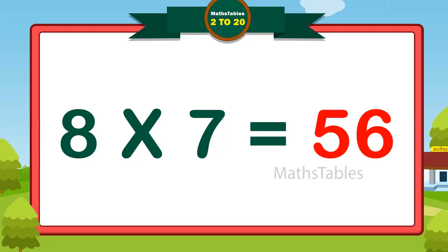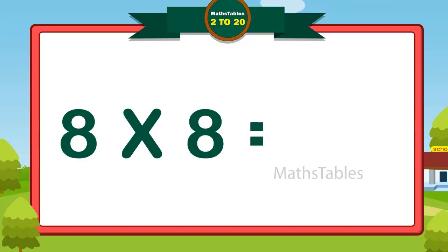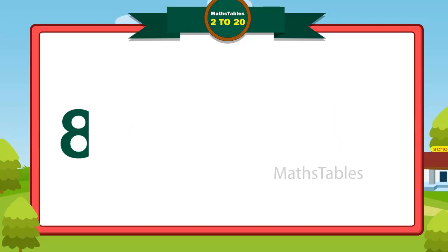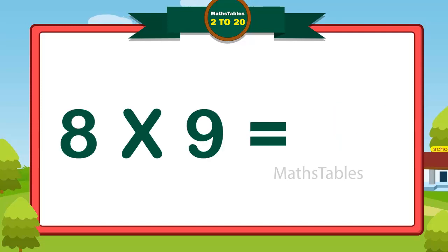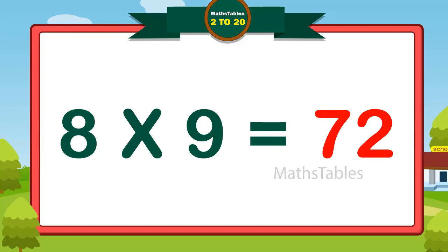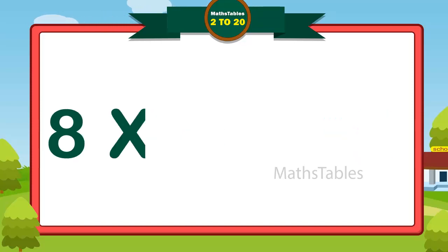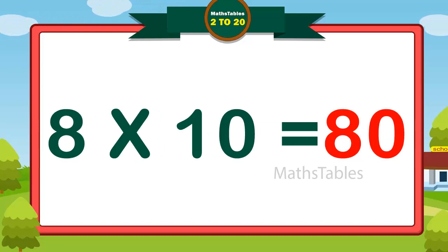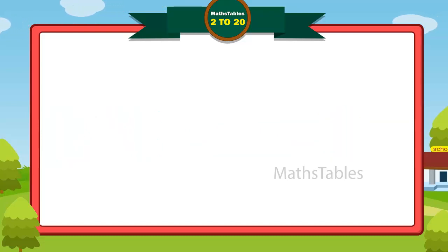8 sevens are 56. 8 eights are 64. 8 nines are 72. 8 tens are 80.